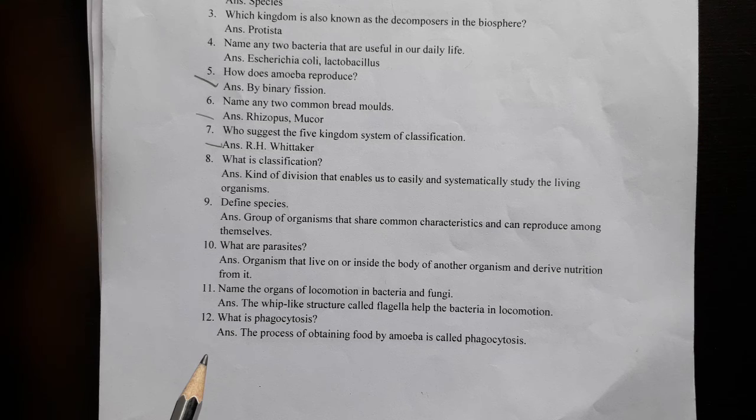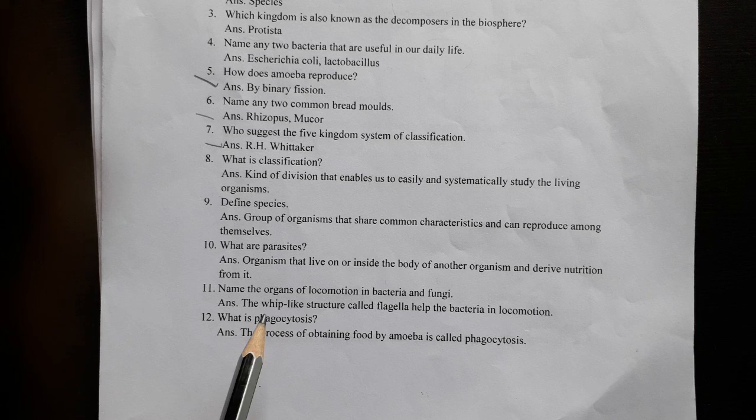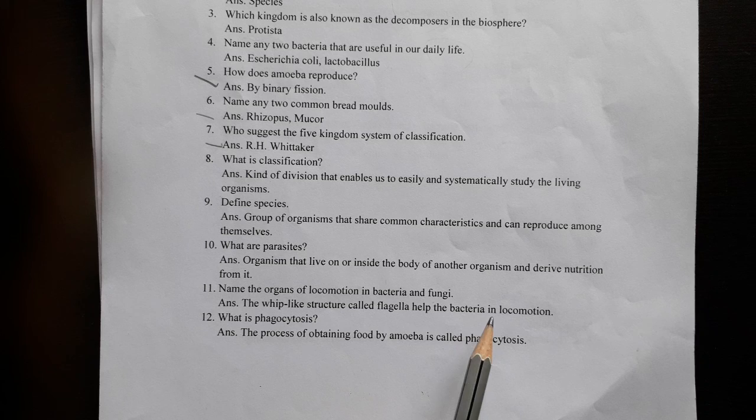Name the organs of locomotion in bacteria and fungi. The process of obtaining food by amoeba is called phagocytosis.